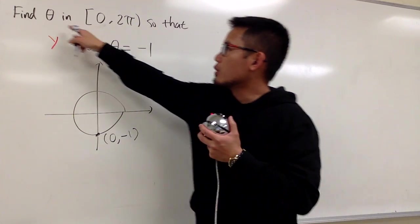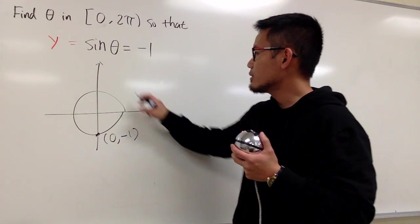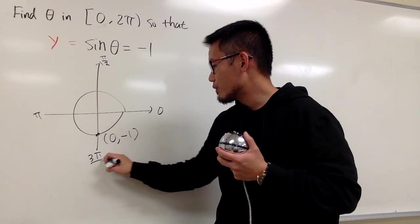And we want the angle theta to be between 0 to 2π. This is 0, this is π over 2, this is π. This right here is 3π over 2.